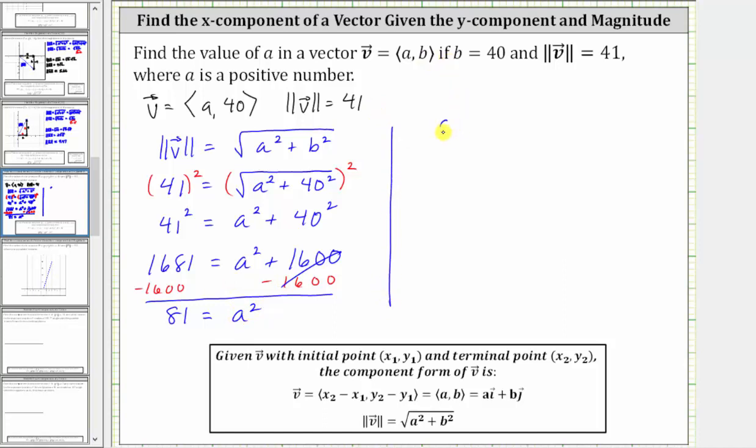So now we know 81 is equal to a squared. In order to solve for a, we need to undo the squaring by taking the square root of both sides of the equation.